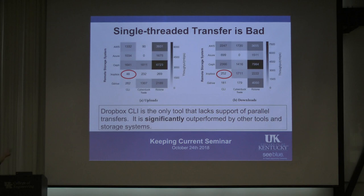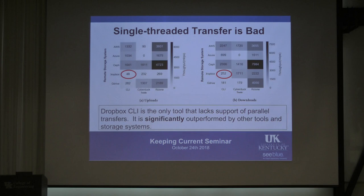Now let's look at some results. I'll show this heat map pointing out some numbers. On the y-axis we have the different cloud providers; on the x-axis we have the tool used. The darker the square, the better the throughput we were able to get. First of all, we found that Dropbox was terribly bad for uploading data. The reason it was so bad is shown by these red numbers — they were doing single-thread transfers. Even though we were at the DTN, which has a 40-gigabit line going out, it was just sending 16-megabit chunks, waiting for confirmation, and then again and again.